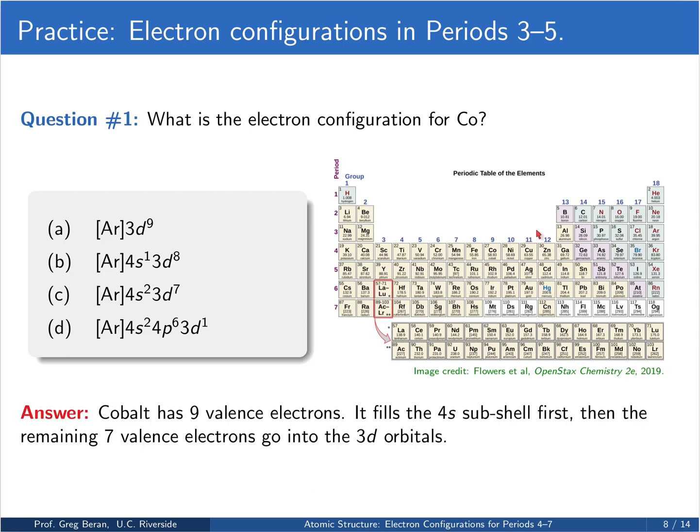Okay, so cobalt has 9 valence electrons. We're going to start off putting the first 2 in the 4s orbitals, which leaves 7 for the 3d. And so we end up with a 4s2 3d7 valence configuration on top of an argon core.